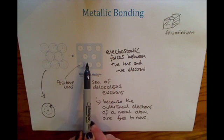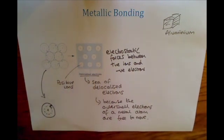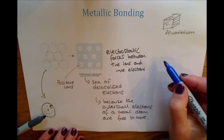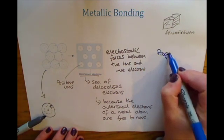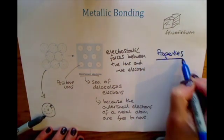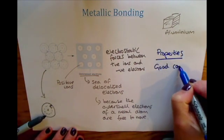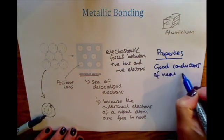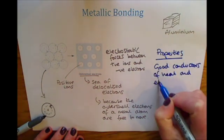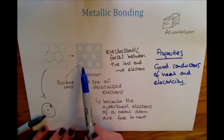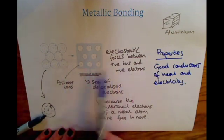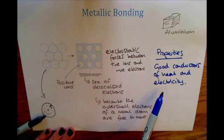Because these electrons are delocalized and free to move, that gives metals some special properties — they are very good conductors of heat and electricity. The property this gives them is that they are good conductors of heat and electricity, because the electrons are free to move, and the flow of electrons allows the charge to be carried through the metal.